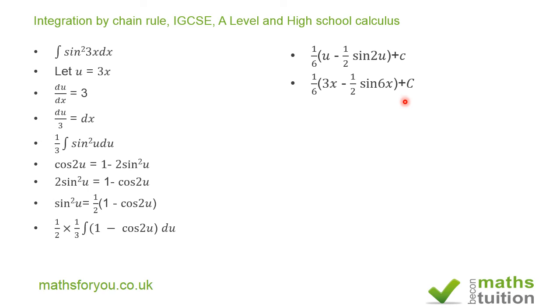Now if you leave your answer at this or you can decide to open up the bracket, I end up with 3x over 6 which is a half x minus 1 12th sine 6x plus the integration constant of C.